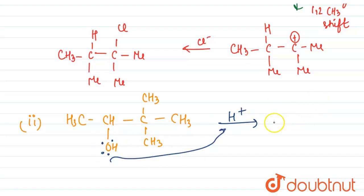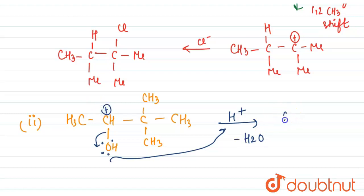Once again, there will be a first attack of H+ from HCl on the oxygen, because oxygen has a lone pair and will donate it to H+. These electrons will then shift such that water leaves as a molecule, and finally a carbocation will be formed on the secondary carbon.